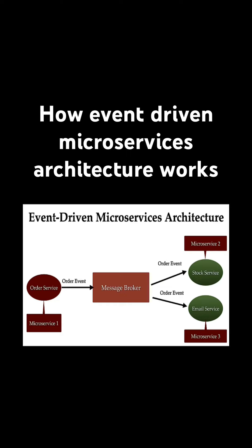Let's look into how a microservice architecture works. In a microservice architecture, we create multiple microservices and use a message broker as a messaging system for asynchronous communication between them. For example, we have an audio service as microservice one, a stock service as microservice two, and an email service as microservice three.